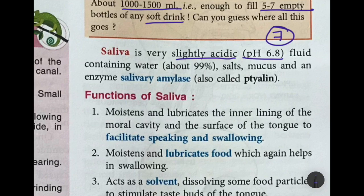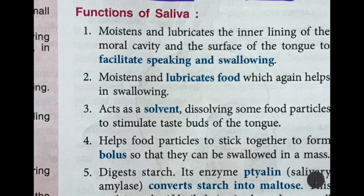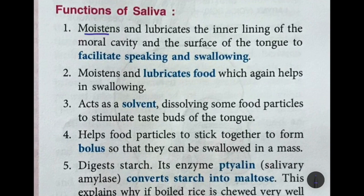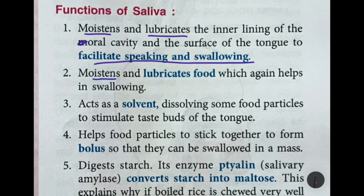Saliva is very slightly acidic with a pH of 6.8. About 99% of the saliva is water, and then it contains salts, mucus, and most importantly an enzyme known as salivary amylase, or ptyalin. The first function of saliva is that it moistens and lubricates the inner lining of the oral cavity and the surface of the tongue to facilitate speaking and swallowing — if your mouth is dry, your tongue will stick to the walls of your mouth and you won't be able to speak.